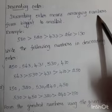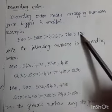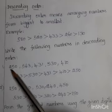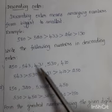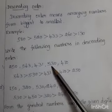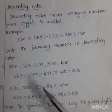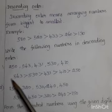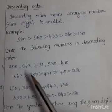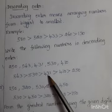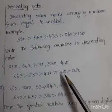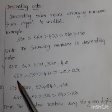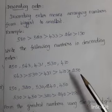Descending order means arranging numbers from biggest to smallest. Write the following numbers in descending order: 250, 563, 431, 530, 410. Students, which is the biggest number? 563. So first we write 563, greater than 530, greater than 430, greater than 410, greater than 250. 563 is the biggest number and 250 is the smallest number.